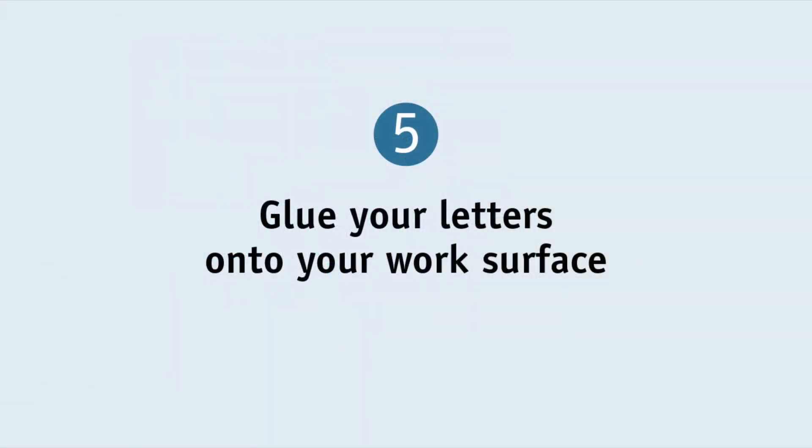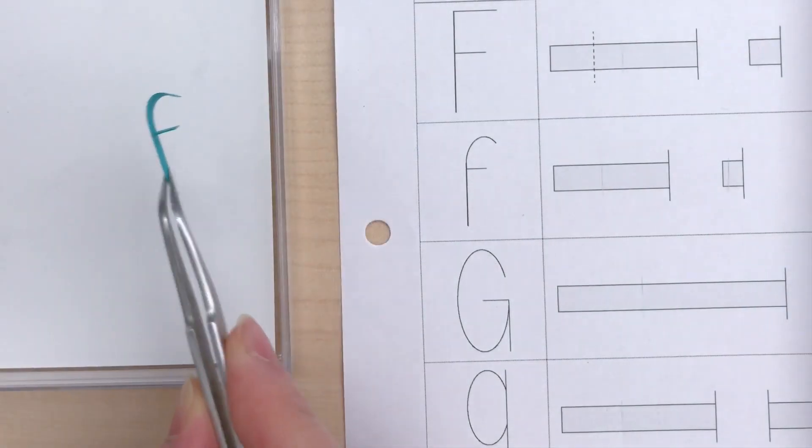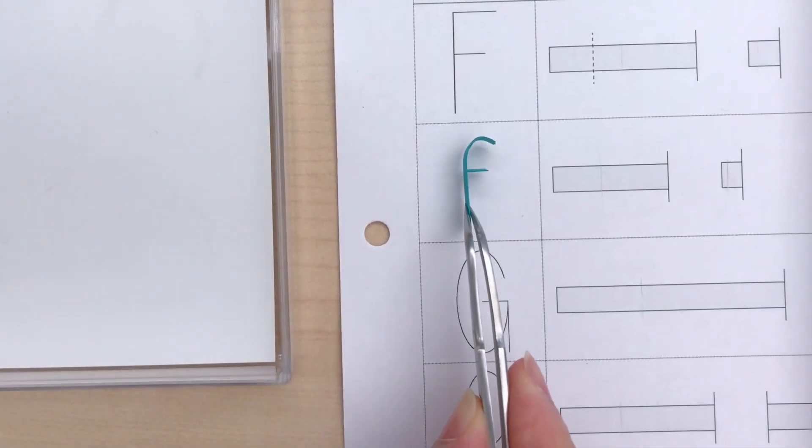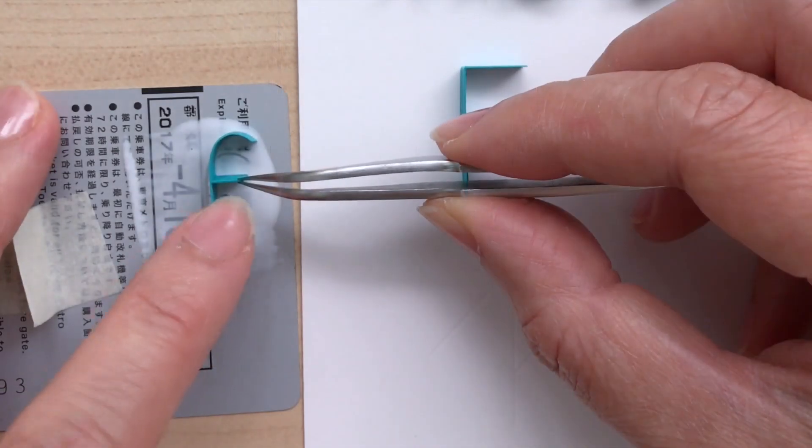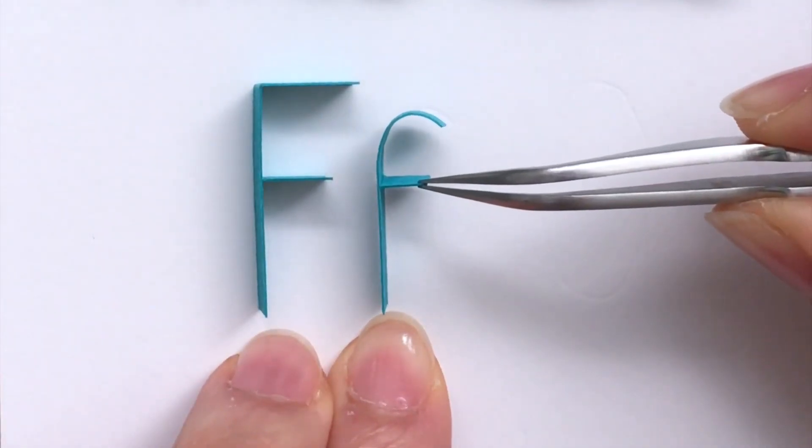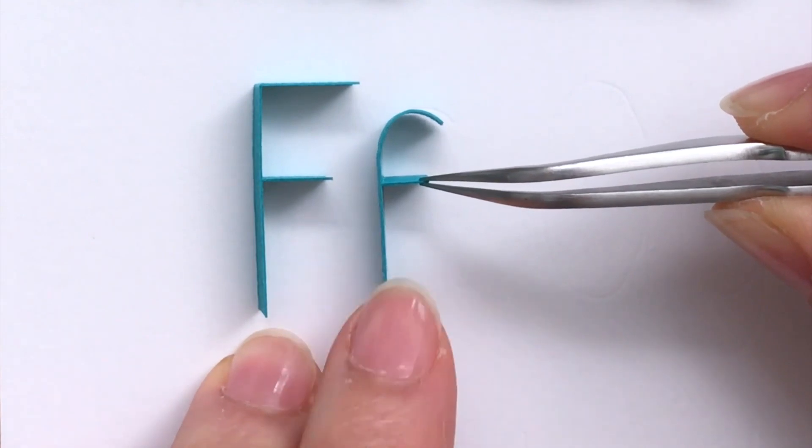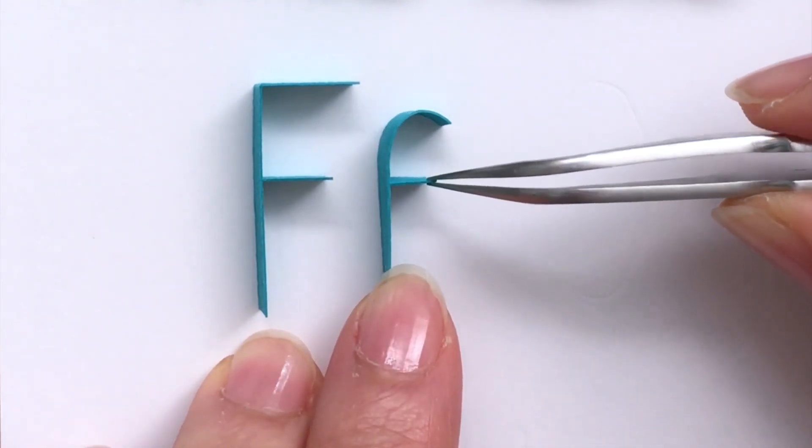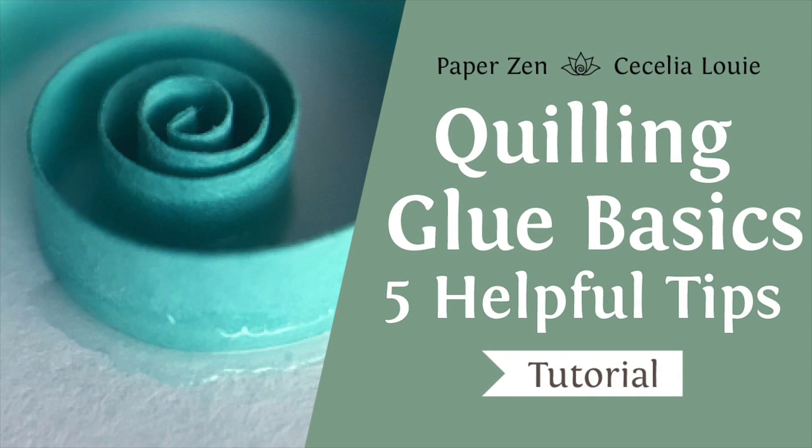Step 5: glue your letters onto your work surface. During storage the letters may relax so I check them against the template and reshape them if needed just before gluing. If you'd prefer to glue them right after you form them that's great too, do whatever works for you. Please watch my other video quilling glue tips to see why I smear my glue.